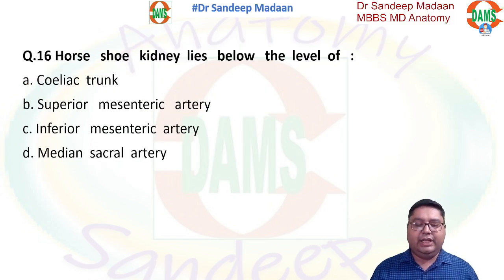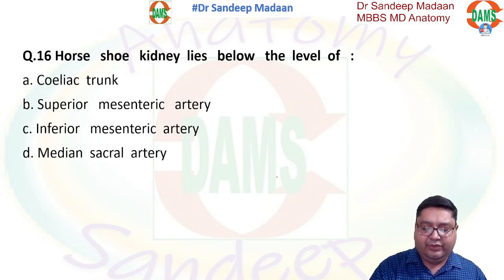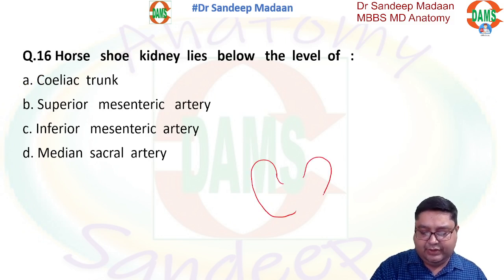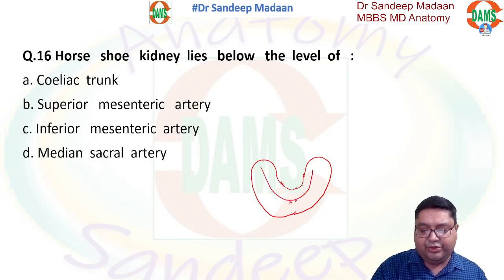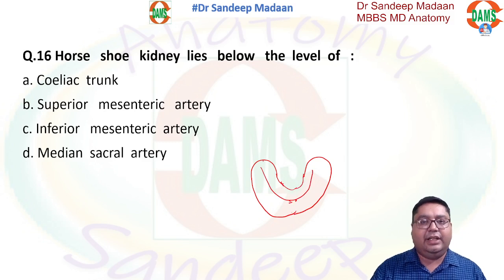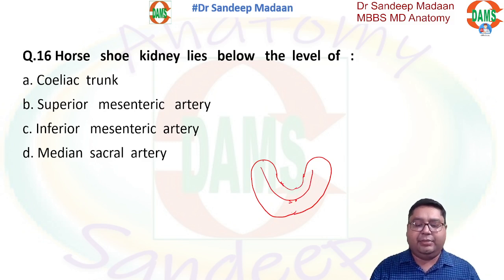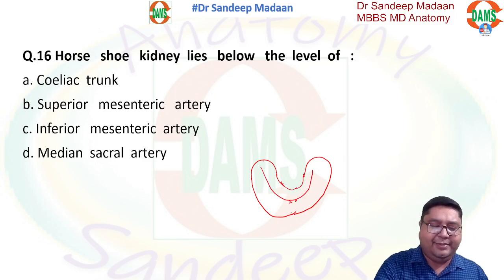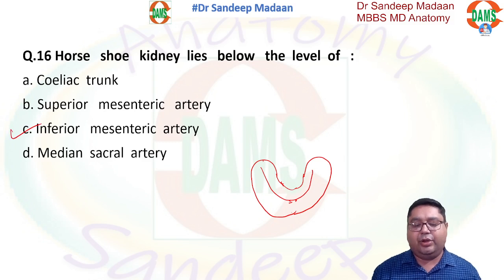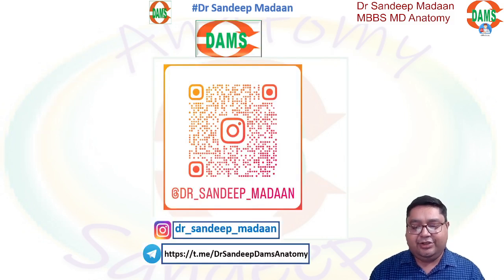Horseshoe kidney lies below the level of what? In a horseshoe kidney, the lower ends of the kidneys get fused. As they try to ascend, the inferior mesenteric artery blocks the ascent — that is why the horseshoe kidney remains at a lower level, lying below the level of the inferior mesenteric artery.